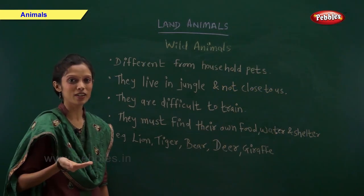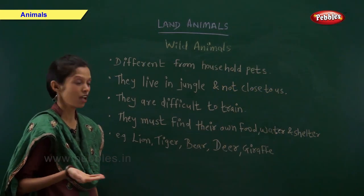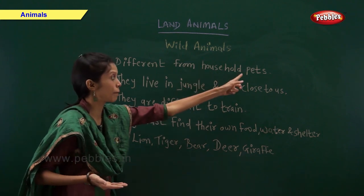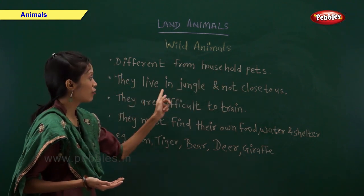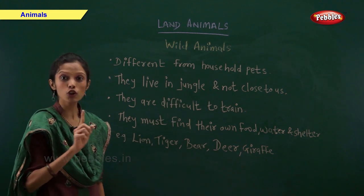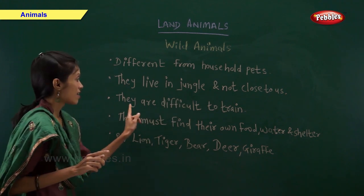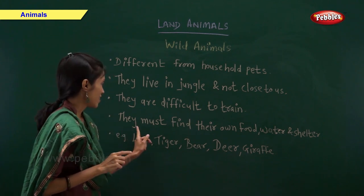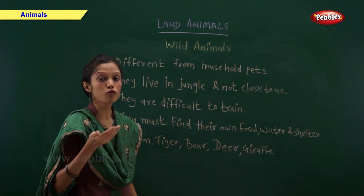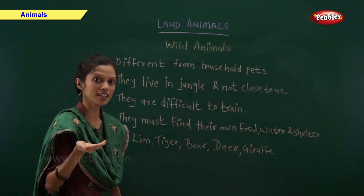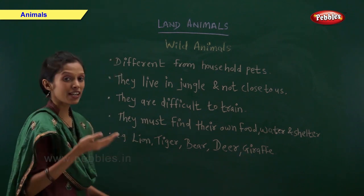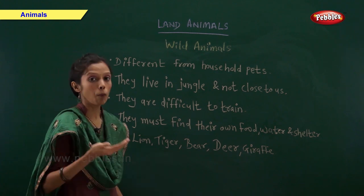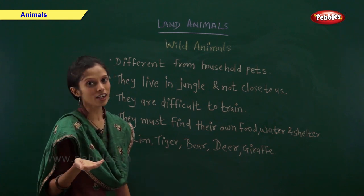Now let us have a look at wild animals. Wild animals are different from our household pets. They live in jungle and not close to us. They are very difficult to train. They must find their own food, water and shelter. Some examples of wild animals are lion, tiger, bear, deer and giraffe.